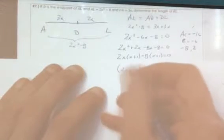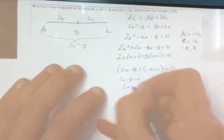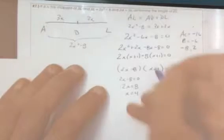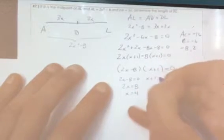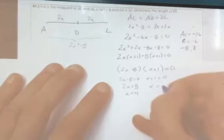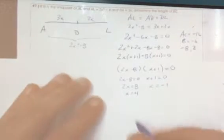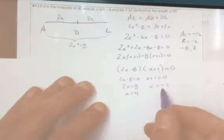So 2x minus 8 equals 0. Add 8. 2x equals 8. x equals 4. Then here we have x plus 1 equal to 0. Subtract 1 from both sides. x equals negative 1. So we have x equals 4 and x equals negative 1.